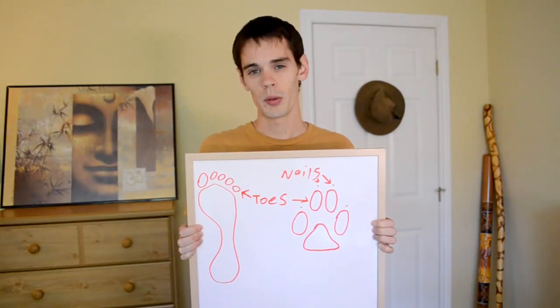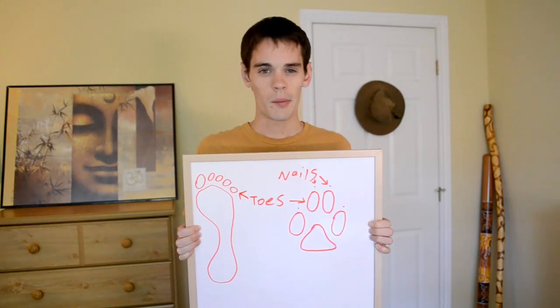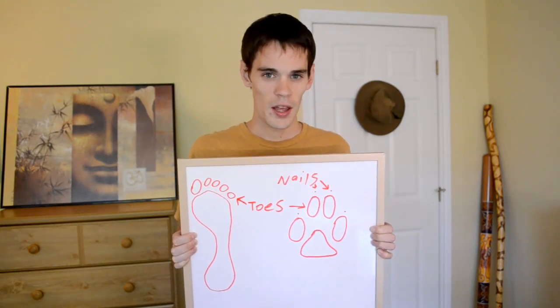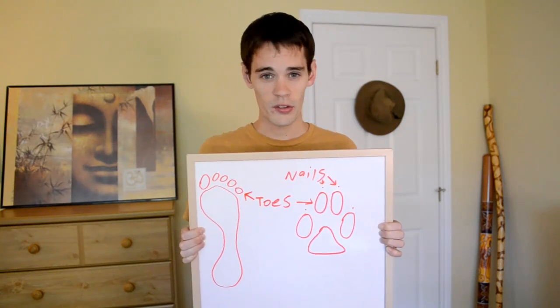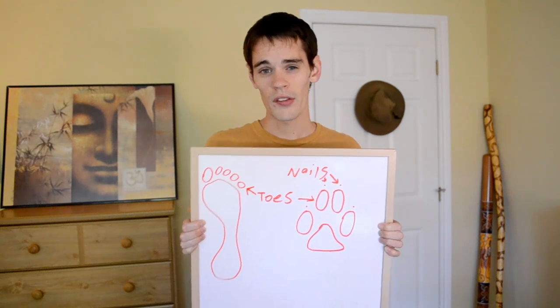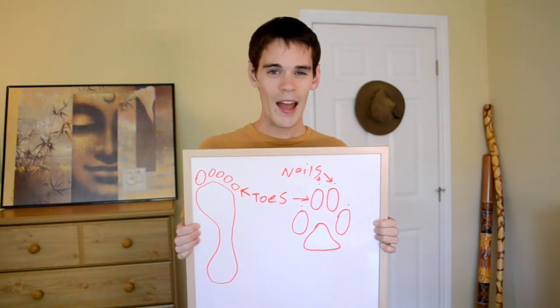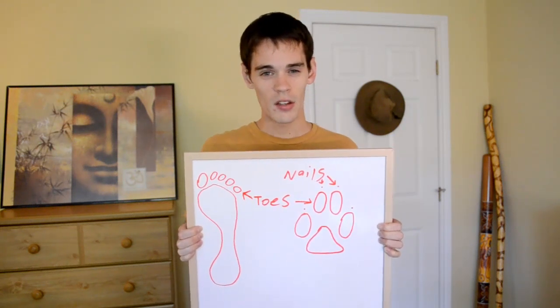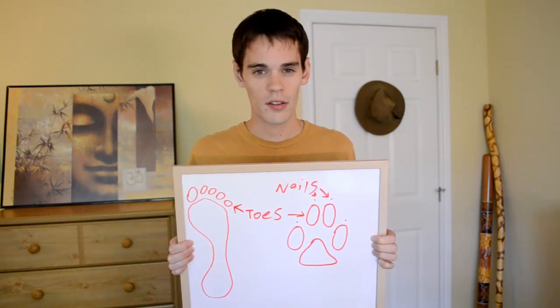The next thing we want to be looking at is the nails. Looking for nails can be really helpful because some animals, like the canine family, have nails that usually register in the tracks. Whereas other animals, like cats, usually don't register in the tracks. The relative sharpness versus dullness of the nails can also be a really good indicator of domestic animals versus wild animals.